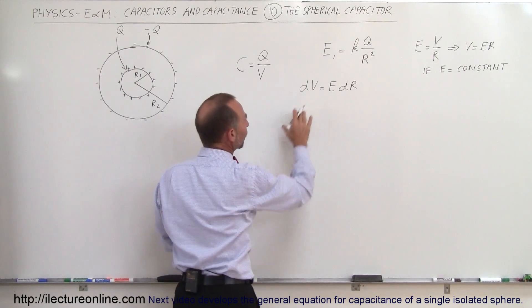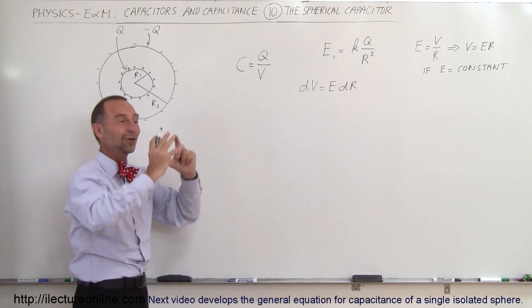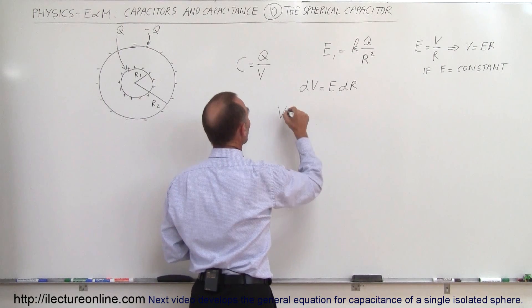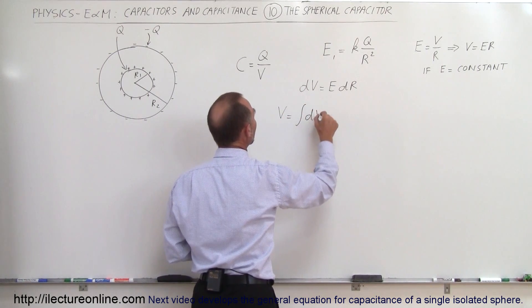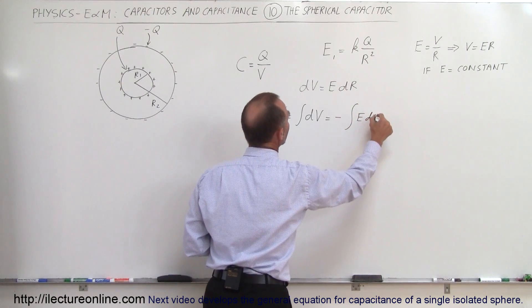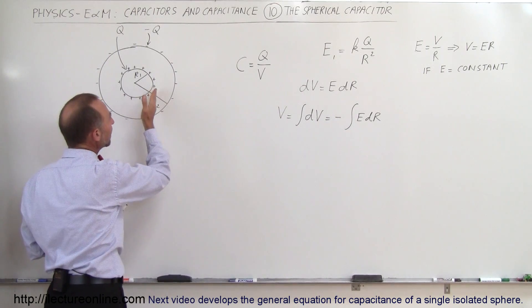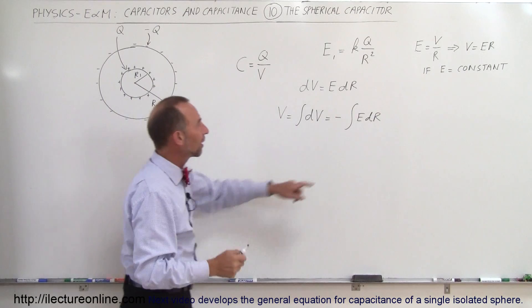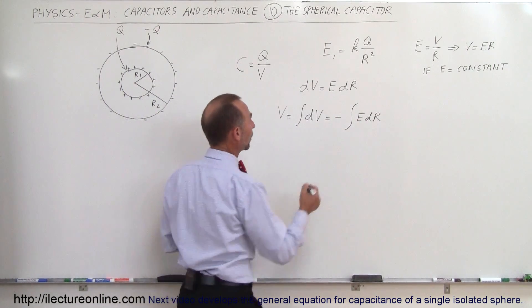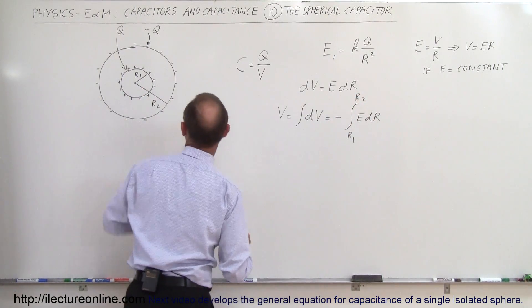dV is the change in potential between the inner and outer sphere. The total potential V is equal to the integral of all the dVs, which equals negative the integral of E times dR. The negative is needed because as the radius increases, the potential decreases — as R gets bigger, the potential gets smaller — so we need a negative to compensate. We'll integrate this from R1 to R2.